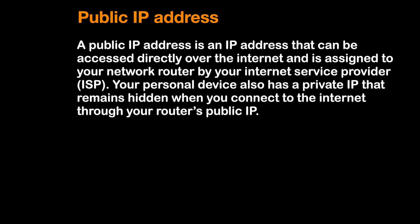Usually there are two types of IP addresses: public IP addresses and private IP addresses. A public IP address is an IP address that can be accessed directly over the internet, and it is assigned to our network router by our Internet Service Provider.